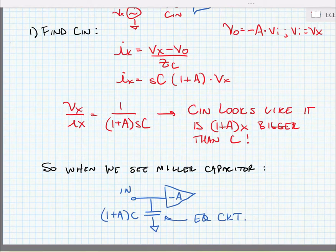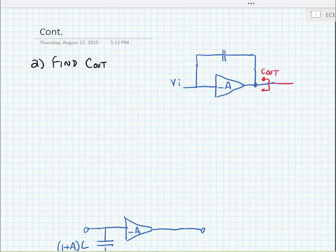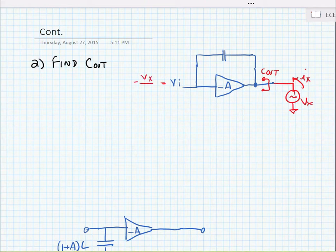All right, here we want to do the same analysis. We want to find the output capacitance looking this direction, Cout. To do so, of course, we're going to put a test voltage source in. And we're going to measure the current Ix that flows into that voltage source. Now we know explicitly because of the voltage amplification that Vi is equal to minus Vx over A, the gain factor. And again, we can use KCL at the output node.